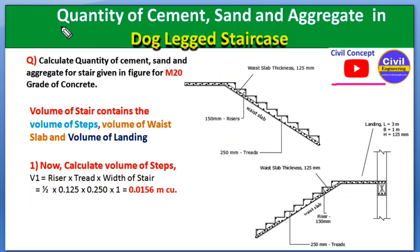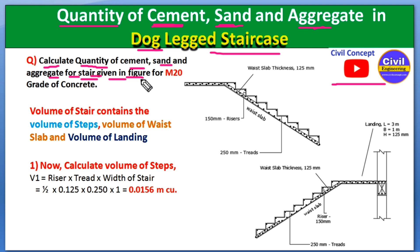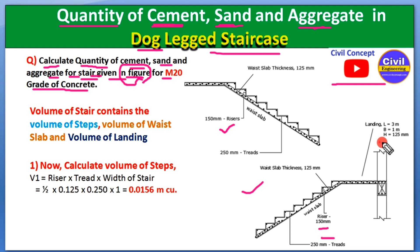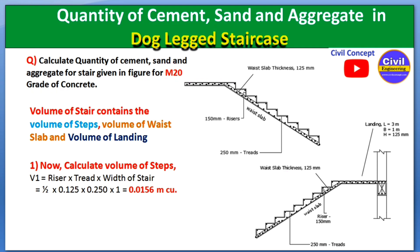Welcome to Civil Concept. In this video I will show you how to calculate the quantity of cement, sand, and aggregate in a dog leg staircase. First, we will calculate the total quantity of concrete, and after that we will calculate the total cement, sand, and aggregate for that concrete. Our question is to calculate the quantity of cement, sand, and aggregate for the staircase given in the figure, using M20 grade of concrete.